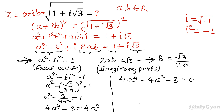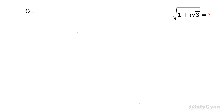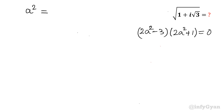This is a quadratic in a squared, a degree 4 equation. We can apply the quadratic formula with a equals 4, b equals negative 4, and c equals negative 3. Or we can factor it as 2a squared minus 3 times 2a squared plus 1 equals 0.